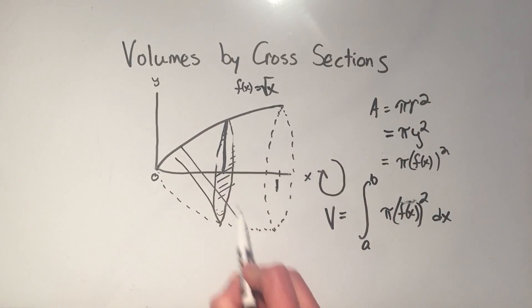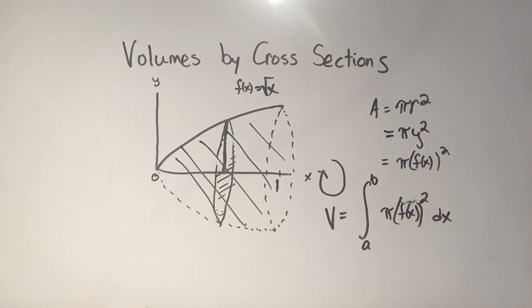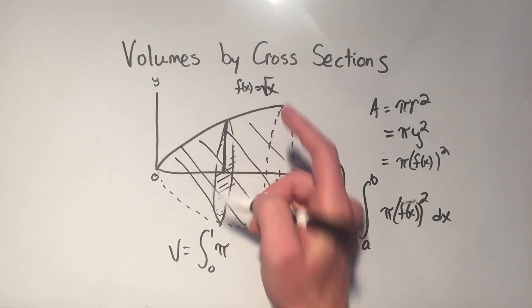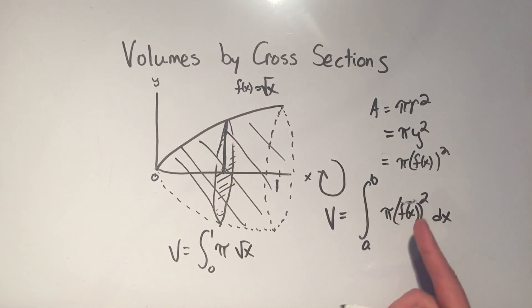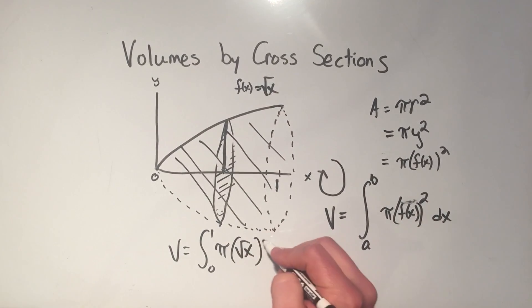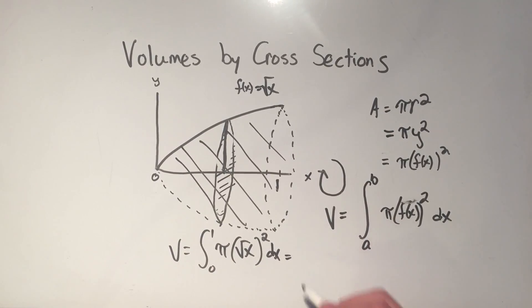So I want to find the volume of revolution of the square root of x from 0 to 1 revolving around the x-axis. What volume would that make? And it would be like this would be filled in. Well, I'll just use this equation. So the volume is going to be the integral from 0 to 1, definite integral, of pi f of x. Well, f of x is the square root of x, and I have to square that because it's pi radius squared dx.